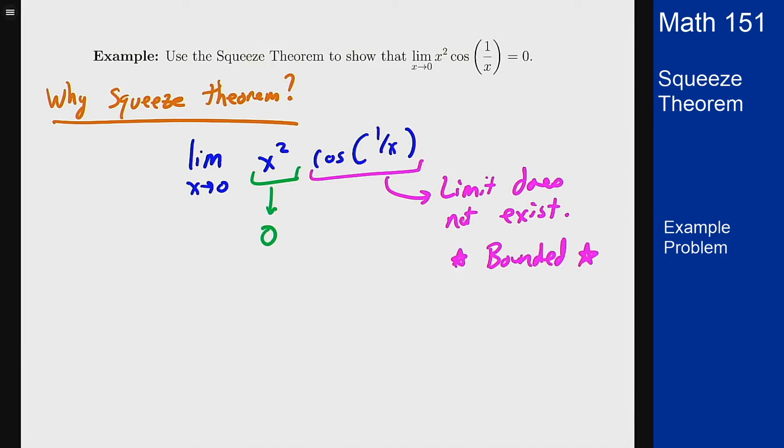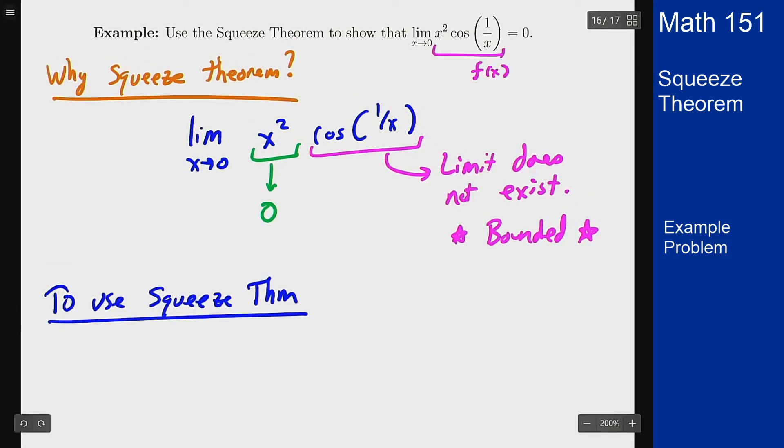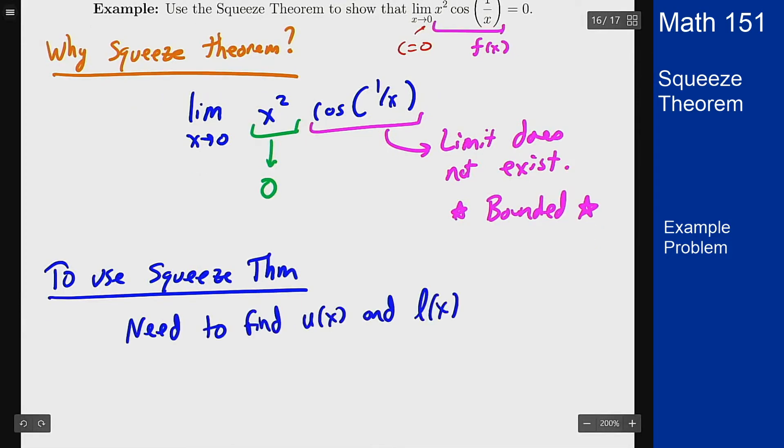So what do I need to do to actually use the squeeze theorem? Well, I have my function f, that's the value I'm given here, and I have my value c, that's just 0. In order to apply the squeeze theorem, I need this function u and l. This upper and lower bound that we're going to pinch in on my function, and they have to prove they actually do these squeezing conditions.